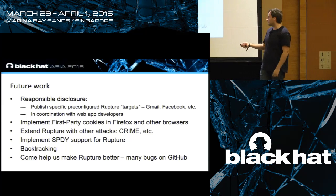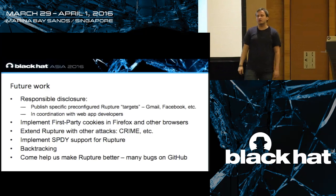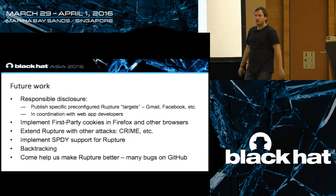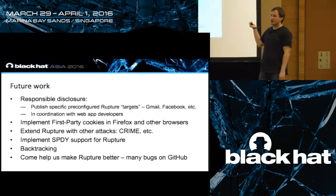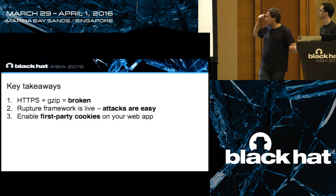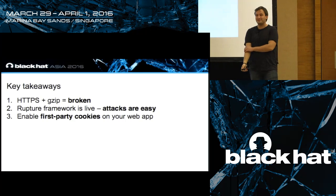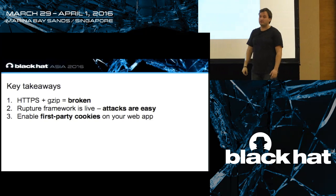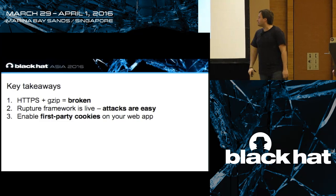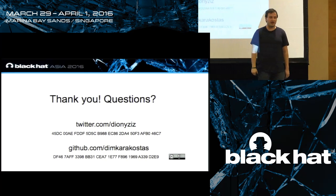For future work, we welcome patches in Rupture - it's a good framework and we invite you to help develop it. We have many bugs open on GitHub. One very important issue is we don't have SPDY support, and Google uses SPDY heavily, meaning we cannot yet attack Google or other SPDY websites - though we have strong indicators our attack would work against SPDY too. We also urge Firefox developers to implement first-party cookies. The key takeaways: HTTPS with GZIP is still broken and worse than before; Rupture is live and attackers can use it now; please take this attack seriously and enable first-party cookies on your web app.